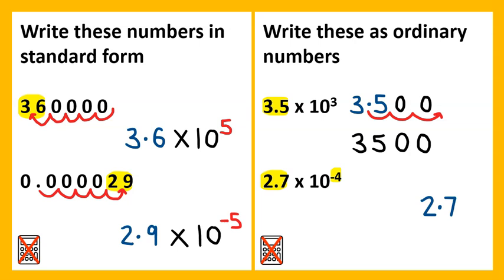On the last example here, we have 2.7 raised to the power of negative 4. So jumping backwards, 1, 2, 3, 4. That means the new point would go here with 0 in front. And again, rewriting this number, we'd have 0.00027.